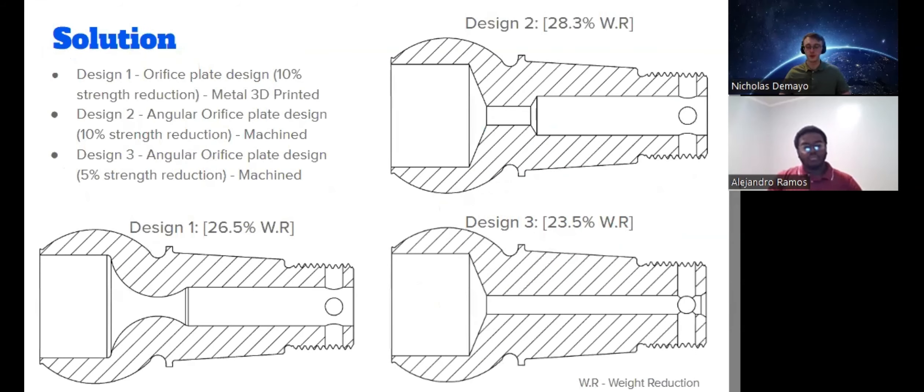Given this goal and these constraints, we came up with these three designs. Design 1 and 2 reduce the strength by 10% while reducing the weight by 26.5% and 28.3% respectively.